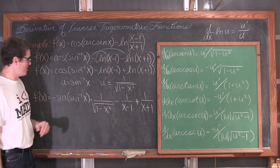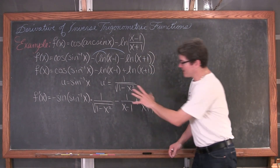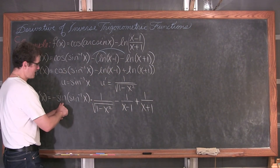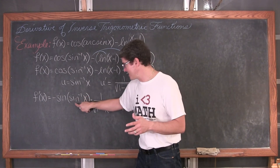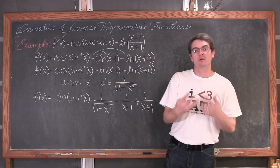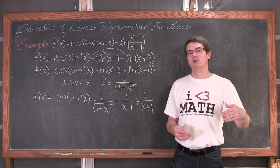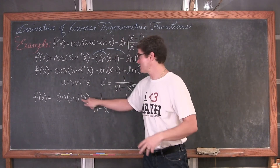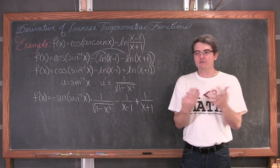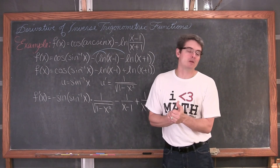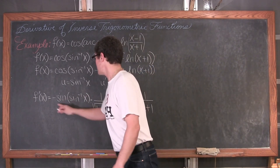Let's not forget that we are taking the sine of the inverse sine — these are inverse math operations. If you put an angle into sine you get a ratio; inverse sine takes that ratio back to an angle; then sine takes you right back to the original value. For example, inverse sine of one-half is pi over 6, and sine of pi over 6 is one-half. So sine of inverse sine of x is simply x, and with the negative we get negative x.